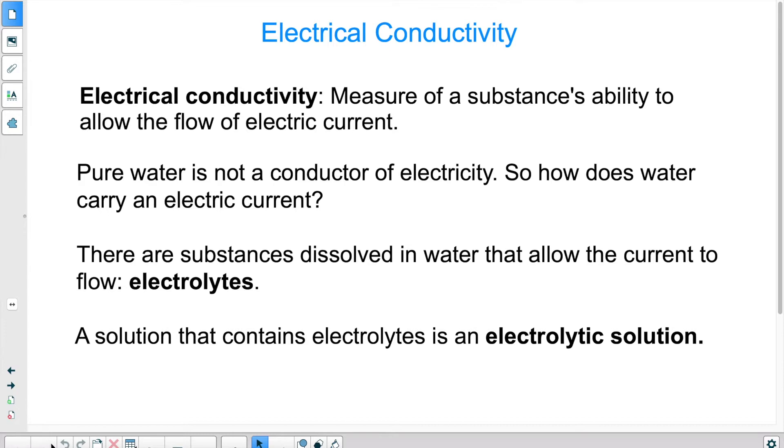So for example, pure water or distilled water does not conduct electricity. Why is this? Because there are no electrolytes in the water. So you need to have certain substances that allow for electricity to flow that are dissolved in the water for water to conduct electricity.